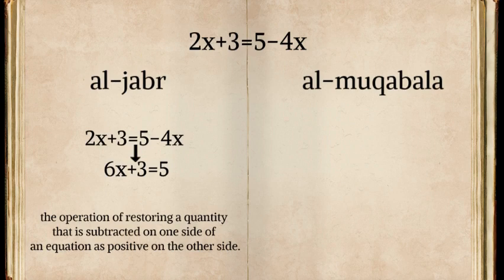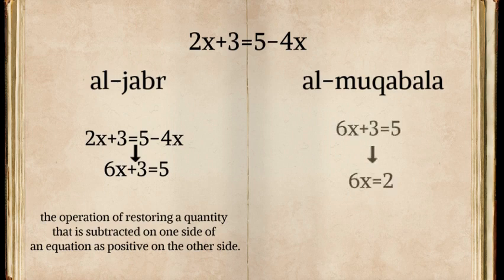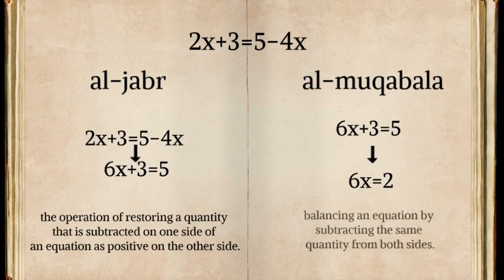In this case, we are adding 4x to 2x on the left side. The operation of al-Muqabala transforms 6x plus 3 equals 5 into 6x equals 2. Al-Muqabala refers to balancing an equation by subtracting the same quantity from both sides. In this case, we are subtracting 3 from both sides.